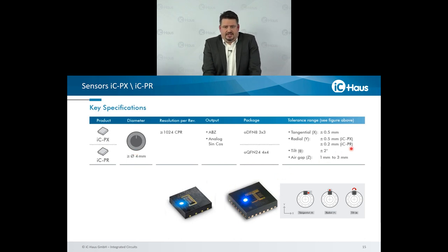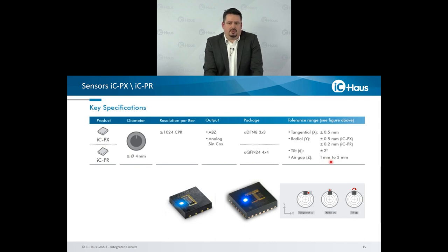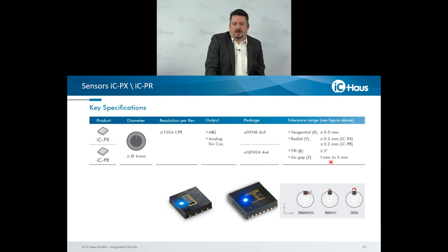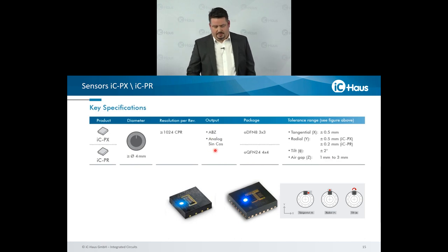On the right side, you see the dimensions of the tangential and radial displacement, which is still from our perspective very large. We are in the range of 0.5 millimeters. The air gap is between 1 millimeter to 3 millimeter. You will find some recommendations for the nominal position or the nominal air gap, which is for the incremental in the range of 1.5 millimeter.